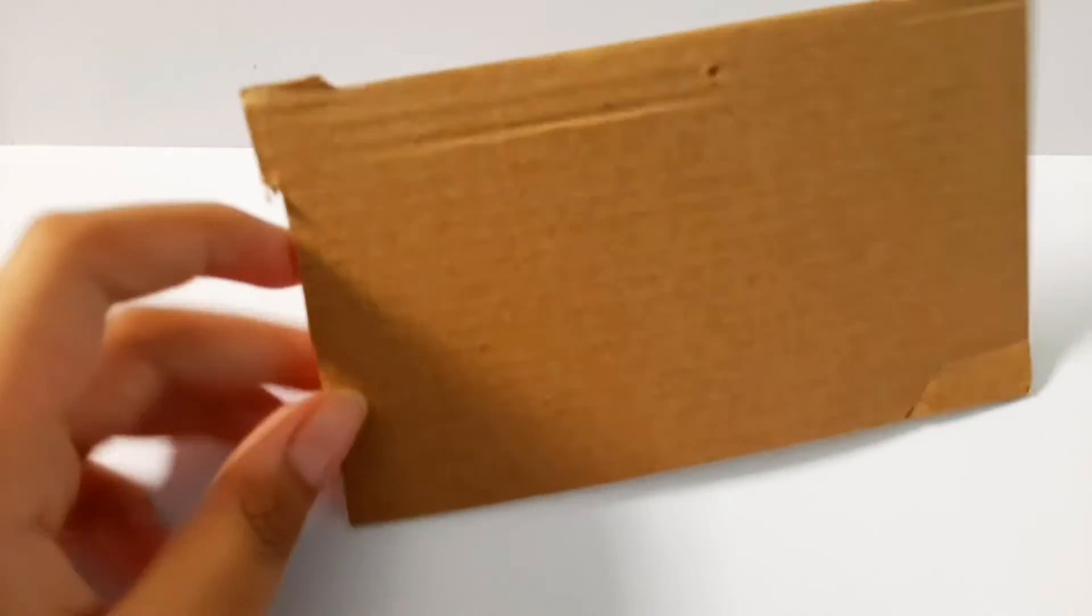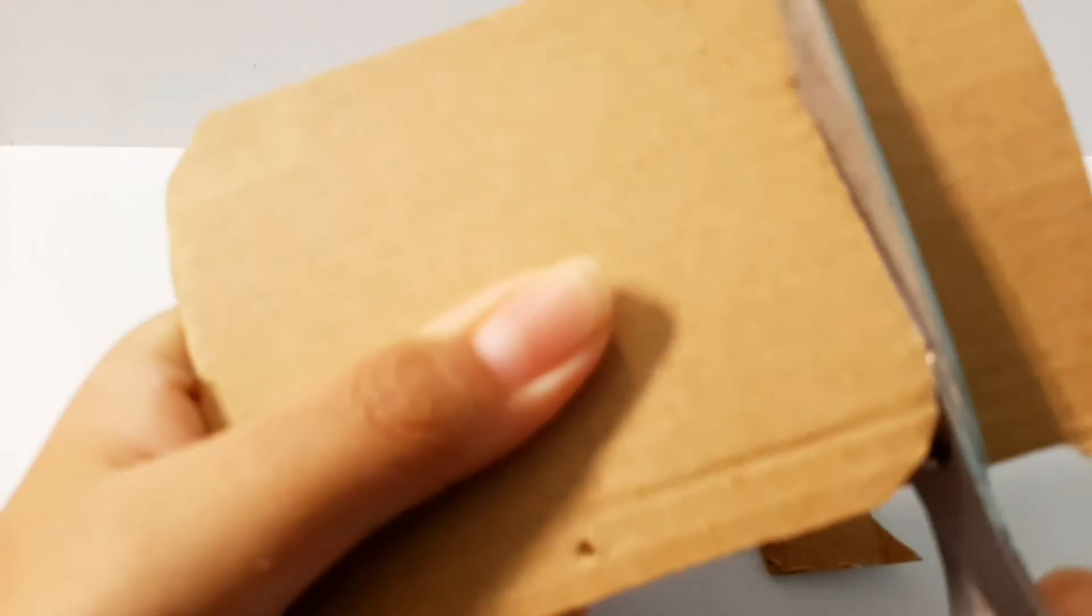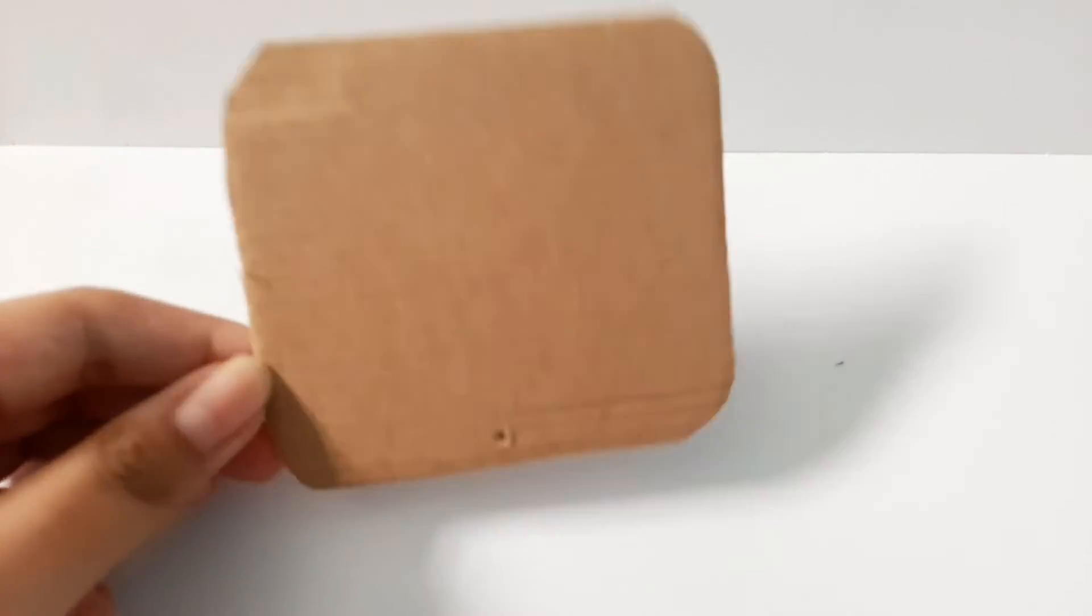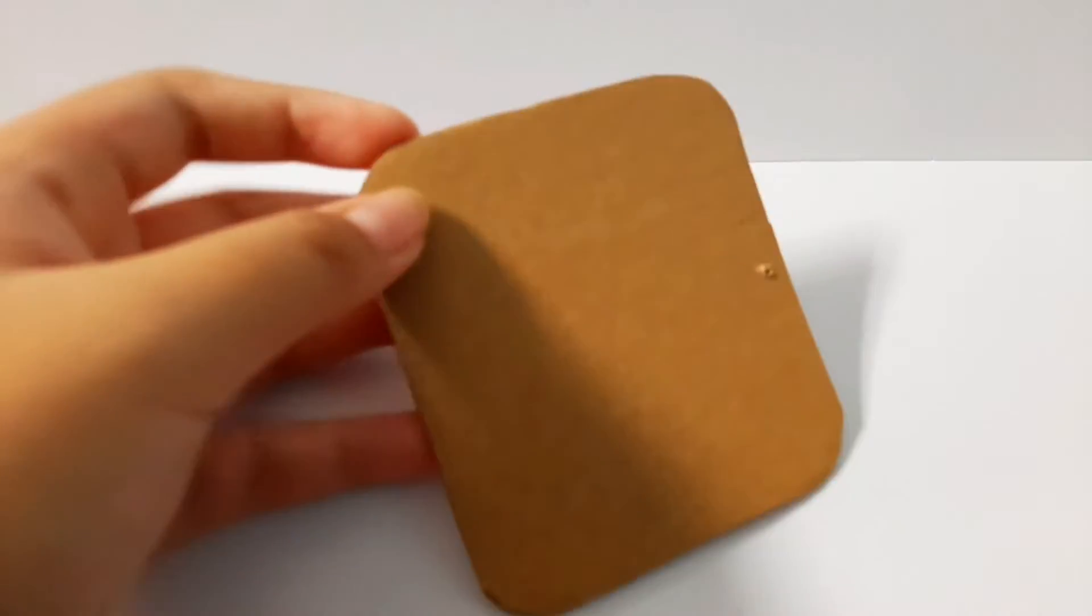Next, take your cardboard, then cut a square. After you're done cutting the cardboard, make a little slit in the middle, just like this.